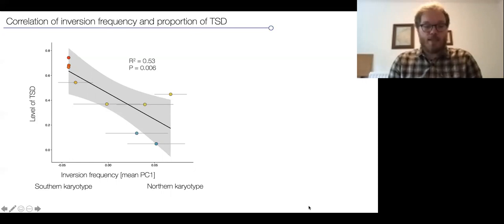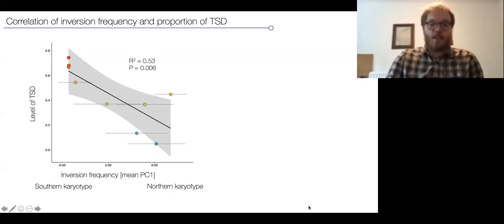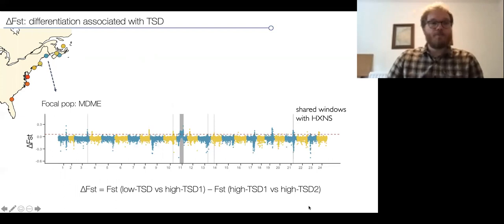However, a problem with many GWAS approaches, particularly in populations where we have strong population structure or isolation with distance, is that the associations are inflated by population structure, and it's really difficult to fully correct for this. We actually made use of this population structure to better understand which regions are really involved and validate those regions.